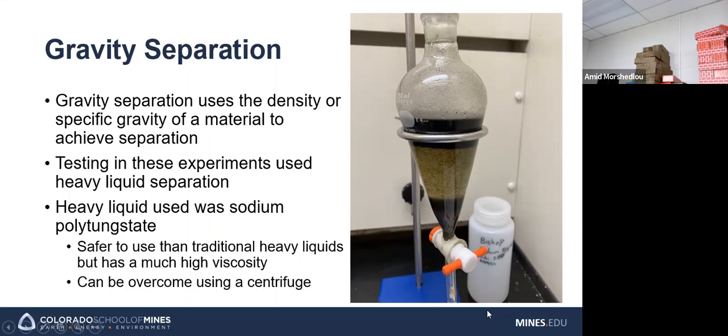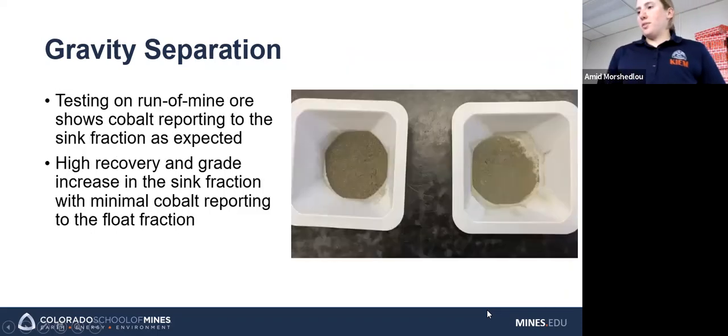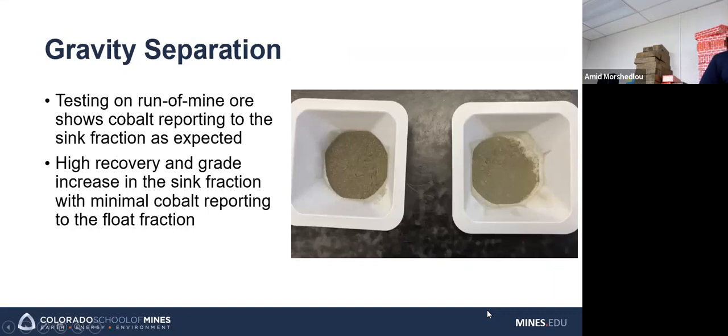So this image here is one of the first heavy liquid separation tests I was able to achieve some sort of visible separation with under normal gravity. So the top fraction is the light or float fraction, and that's basically primarily gang material. And then at the bottom you can see the sink or heavy fraction, and that is where most of the pyrite ends up. So testing on run of mine ore showed that the majority of the cobalt reported to the sink fraction, which is what we would expect as pyrite has a specific gravity of around 5, while the gang material in this case, which was primarily quartz, is in the 2.7 range.